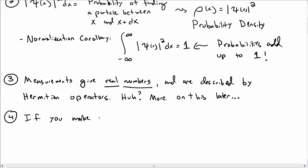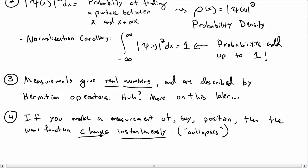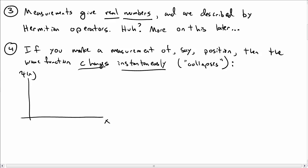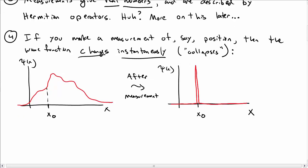Postulate number four is that if you make a measurement of a particle — say you make a measurement of position — then the wave function itself immediately changes. We say it changes instantaneously, and we also use the word collapse: the wave function collapses. If you had a wave function that originally looked like a complicated function, you make a measurement and find the particle at x0, then after the measurement the wave function will look like a spike at x0, because you know the particle is at x0.